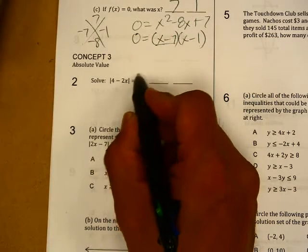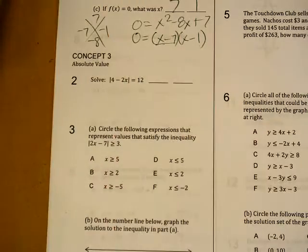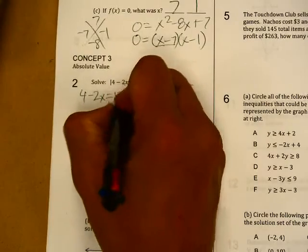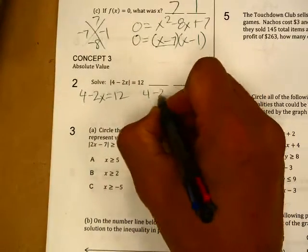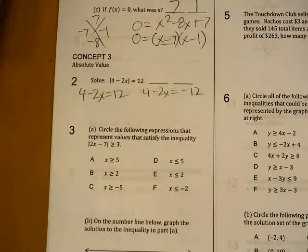If this happened to be an inequality, when you set this one to a negative, don't forget to turn around the inequality. So I have four minus two x equals twelve, and four minus two x equals negative twelve. Solve those two problems separately.